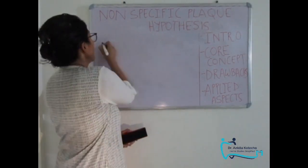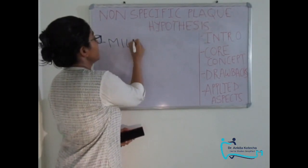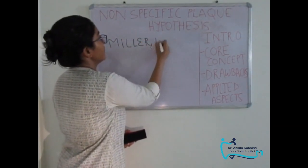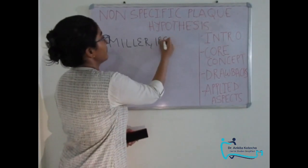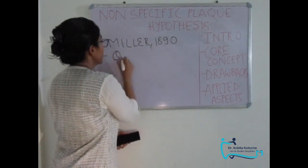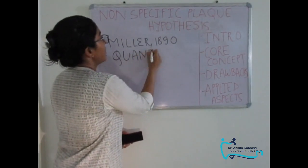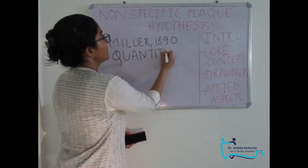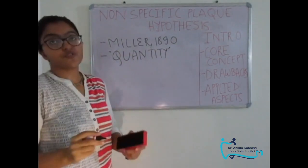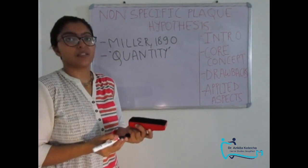Miller in the year 1890 gave the non-specific plaque hypothesis. The core concept of this hypothesis focuses on the quantity of the plaque — that is, the amount of plaque that accumulates over a period of time in conjunction with diminished host response and increased host susceptibility due to aging.